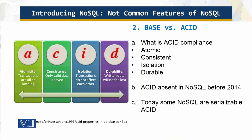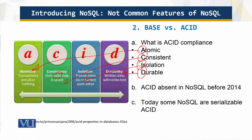Now, what is ACID? ACID is an abbreviation: A stands for Atomic — a transaction goes on and gets completed fully. C is for Consistency — different users read the same valid data. I is for Isolation — transactions don't interfere with each other. And D is for Durable — data written to the database stays there and is not lost. Surprisingly, ACID compliance was not present before 2014, meaning NoSQL solutions existed but did not comply with these four requirements.